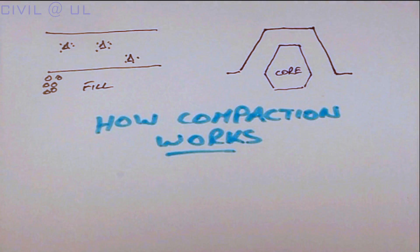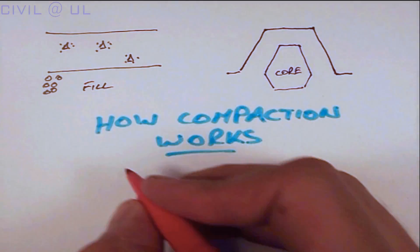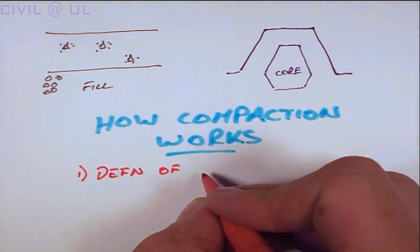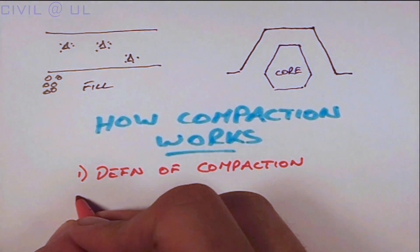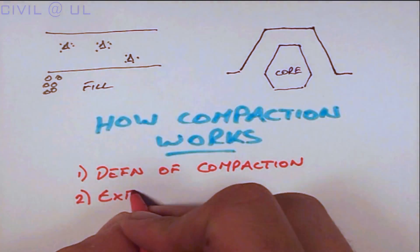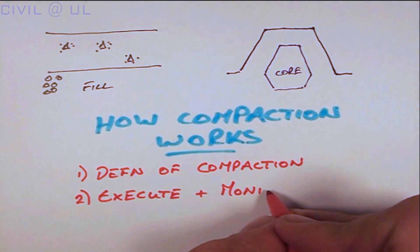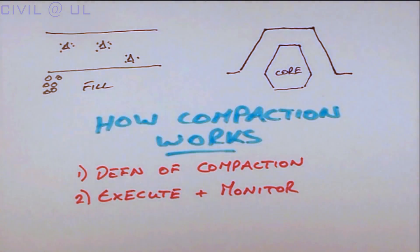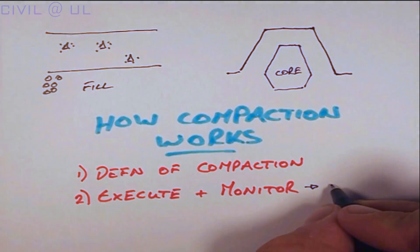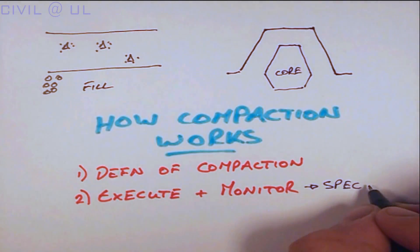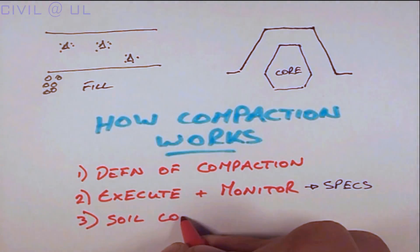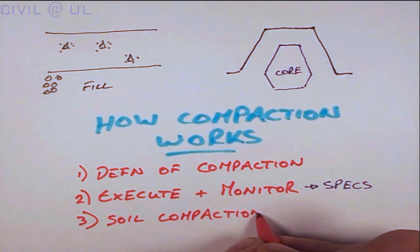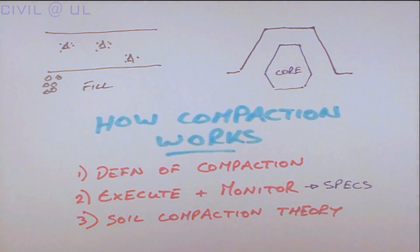There are three things that we need to know. Firstly, what do we mean by compaction, or what is its definition? Two, how do we execute and monitor the compaction process to ensure that the finished product meets the engineer's specifications? And three, what is the theory behind soil compaction?